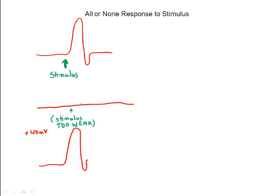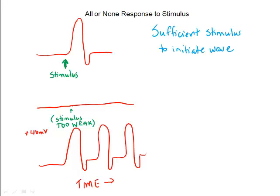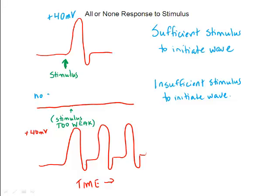However, a greater stimulus may give rise to a greater number of impulses in a given period of time. In summary, if you have a stimulus that's sufficient to initiate a wave of depolarization, it will occur and it will reach plus 40 millivolts as it depolarizes. If the stimulus is insufficient, the wave of depolarization will not occur. So either the stimulus is sufficient and we get depolarization to plus 40 millivolts, or the stimulus is insufficient and we get no depolarization at all. Thus we call this the all-or-none response.